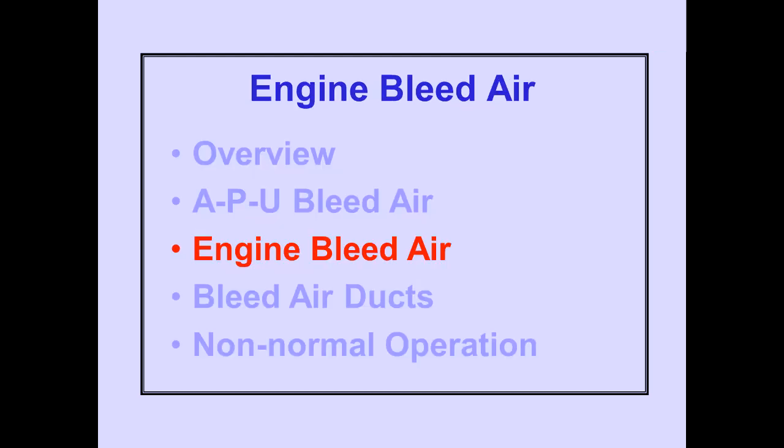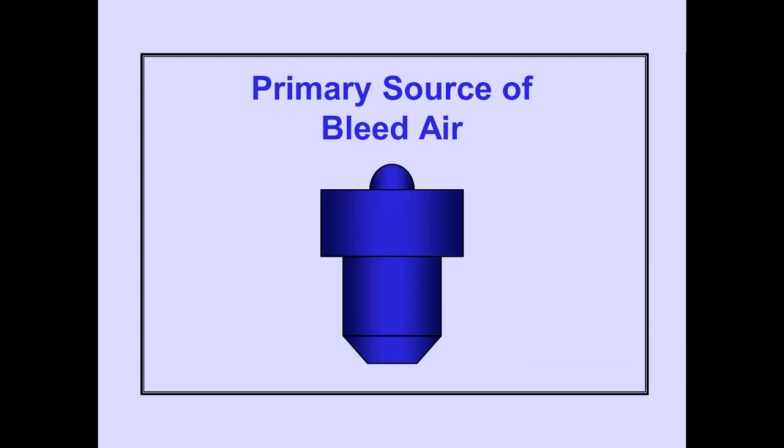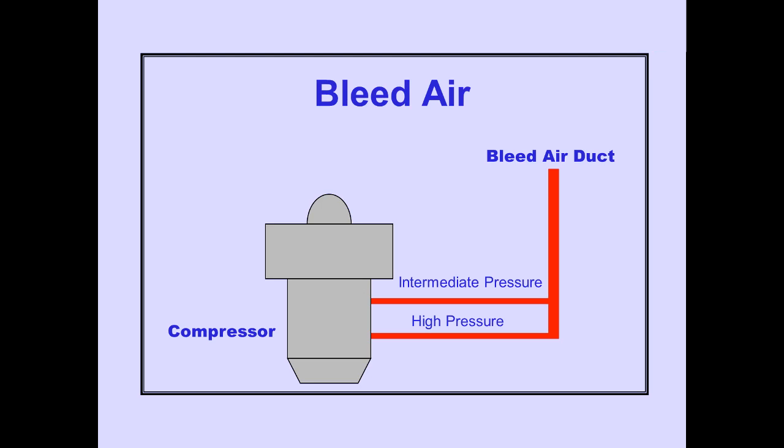Let's discuss engine bleed air. Normally, engines are the primary source of bleed air. There are two sources of engine bleed air: intermediate pressure, IP bleed, and high pressure, HP bleed. Both sources are from the engine compressor section.